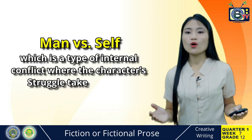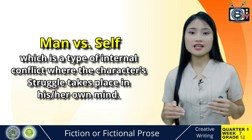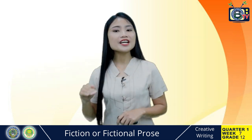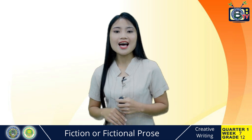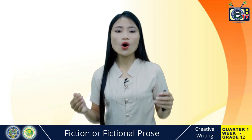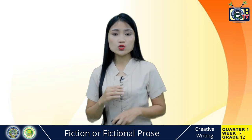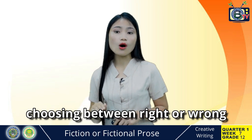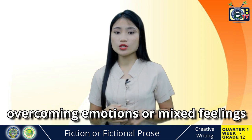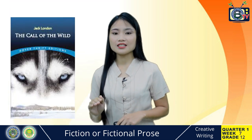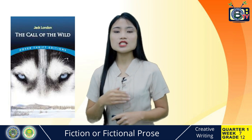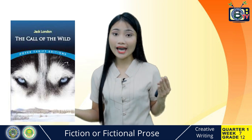Now let's have man vs. self, which is a type of internal conflict where the character's struggle takes place in his or her own mind. Here, a character is struggling to overcome fear, addiction, emotional damage, or other crippling personal issues — usually having to do with a choice like choosing between right or wrong, or overcoming emotions or mixed feelings. An obvious example is the conflict in Jack London's The Call of the Wild, in which the protagonist — in this case a dog — is torn between a domesticated self and a wild self.